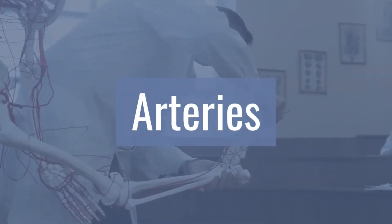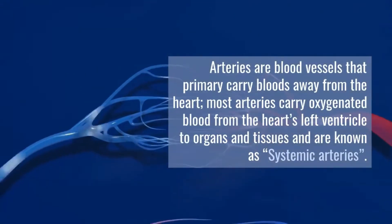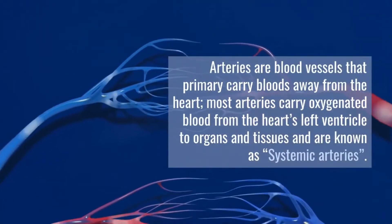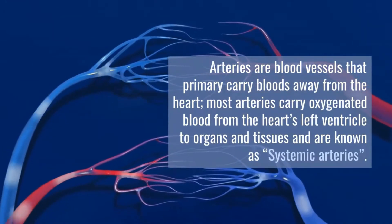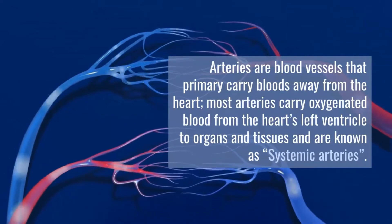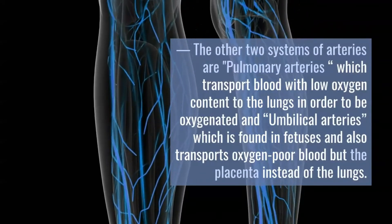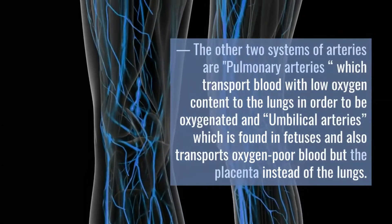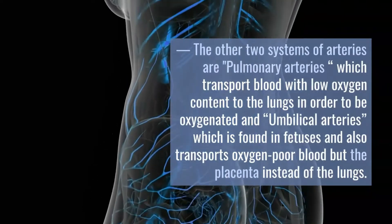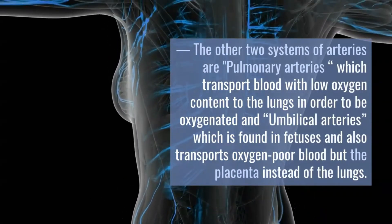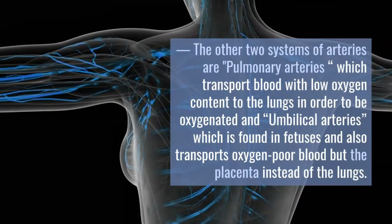Arteries are blood vessels that primarily carry blood away from the heart. Most arteries carry oxygenated blood from the heart's left ventricle to organs and tissues and are known as systemic arteries. The other systems include pulmonary arteries, which transport blood with low oxygen content to the lungs to be oxygenated, and umbilical arteries, found in fetuses, which transport oxygen-poor blood to the placenta instead of the lungs.